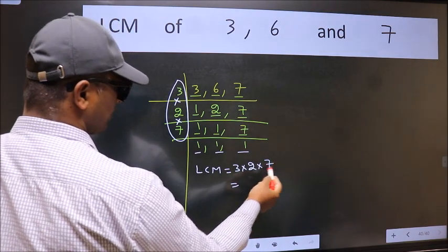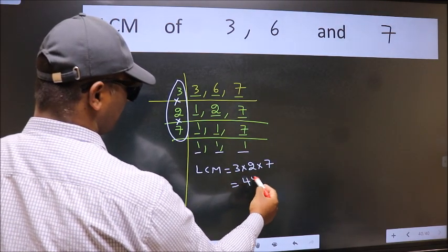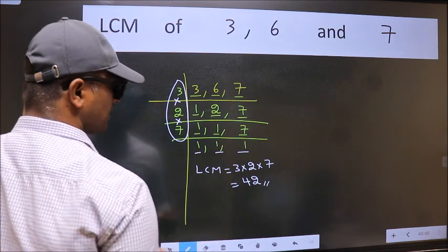When we multiply these numbers we get 42, which is our LCM.